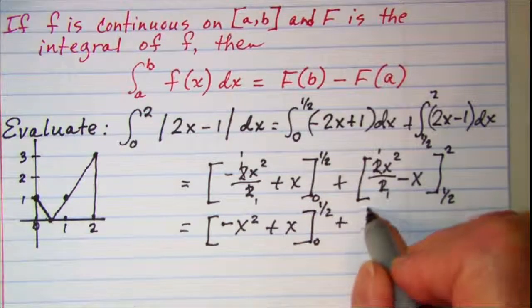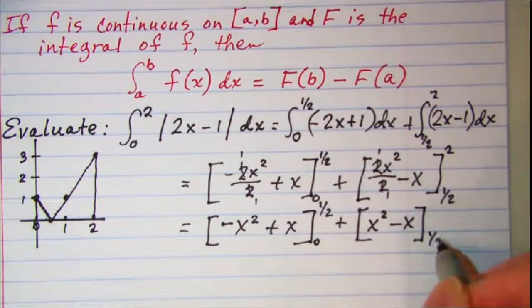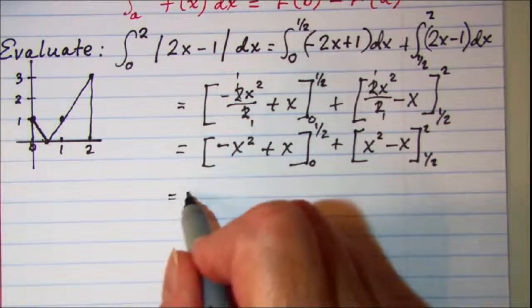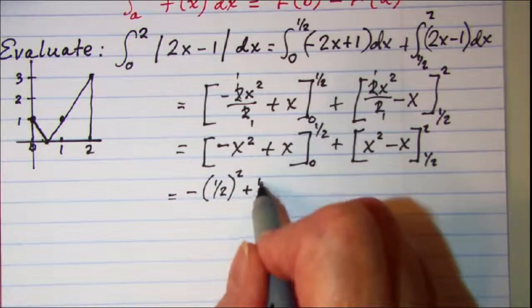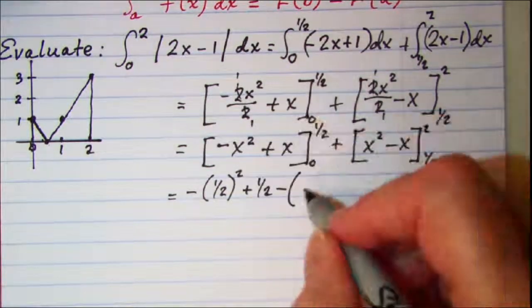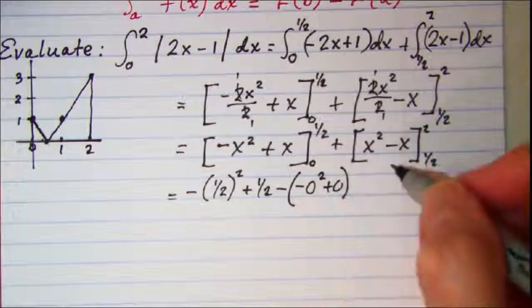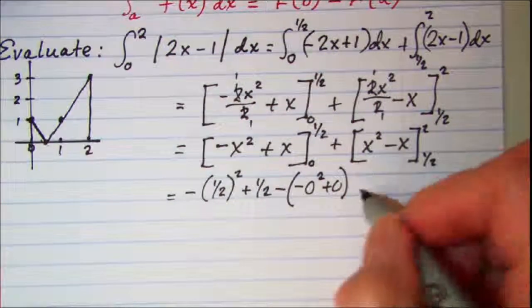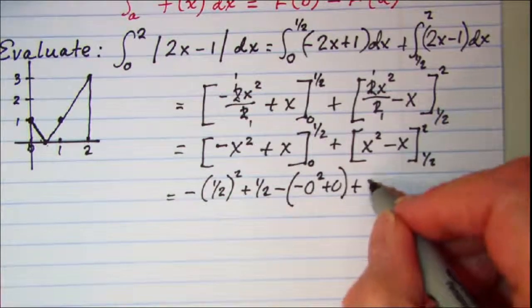So we have negative (1/2) squared plus 1/2, and then minus when I sub in zero I have negative 0 squared plus 0, so this is my first integral. Then plus, now I need to sub in my 2, so I have 2 squared minus 2, subtract, and then I'm going to sub in my 1/2 here, so 1/2 squared minus 1/2.